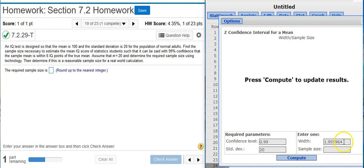The width is going to be the width of the confidence interval that we're looking for, and that is twice the margin of error. So the margin of error we have here is 6 IQ points, so that means my width is going to be 12, because 12 is twice 6.